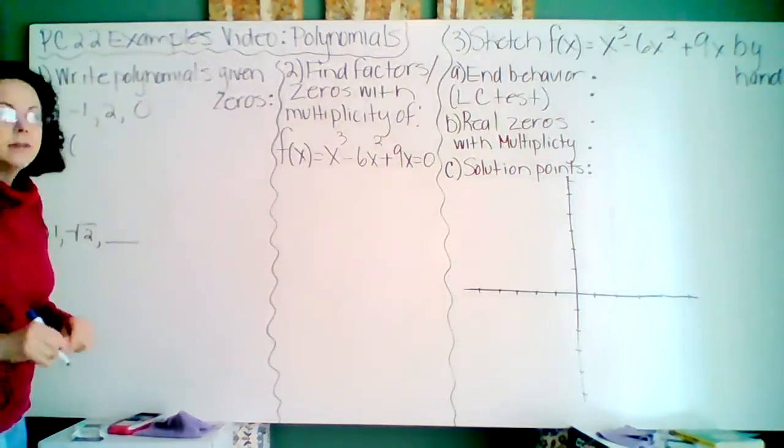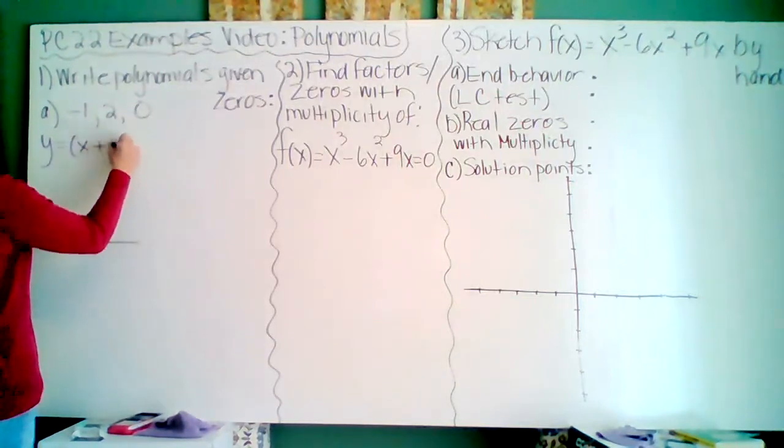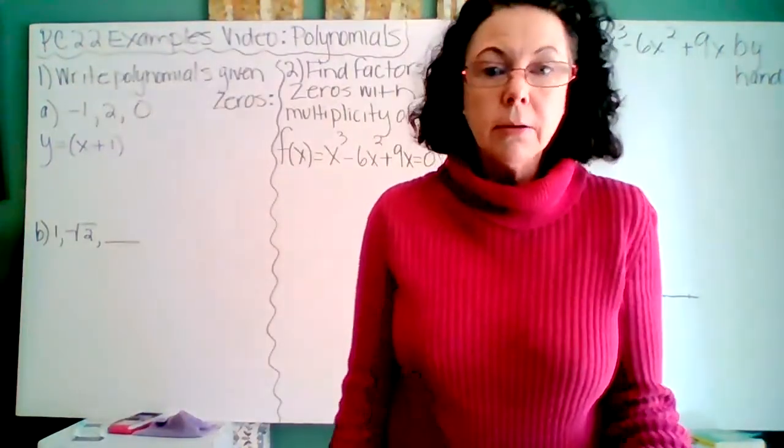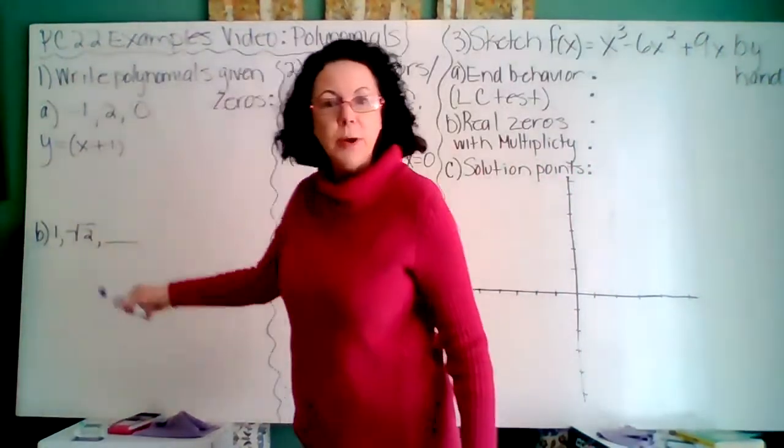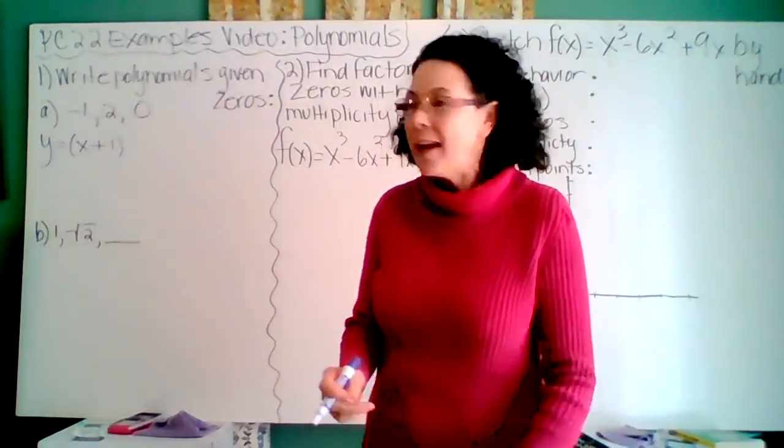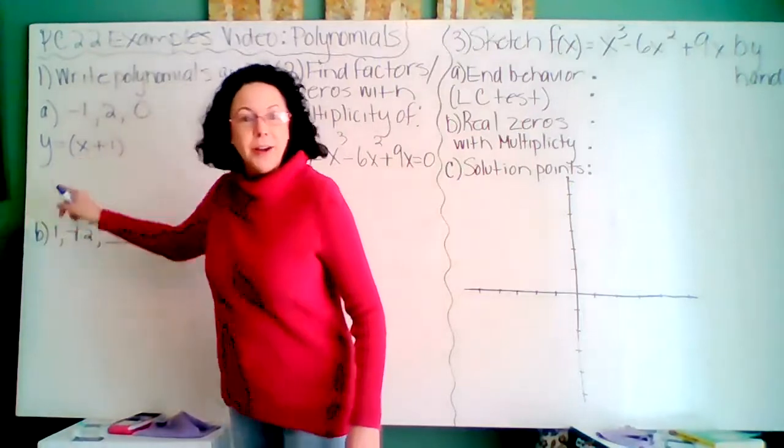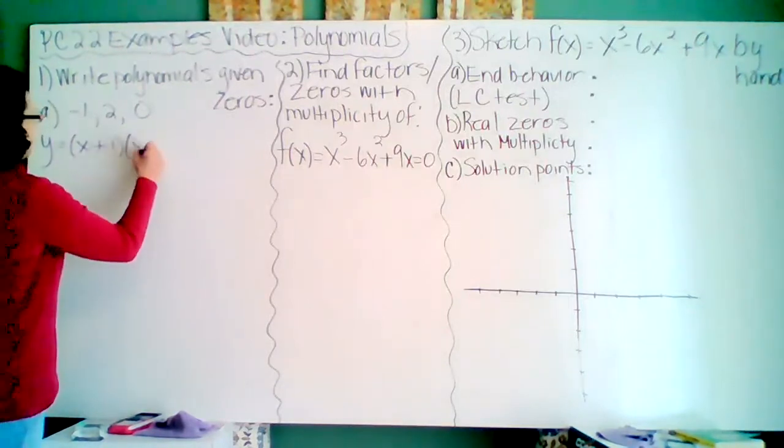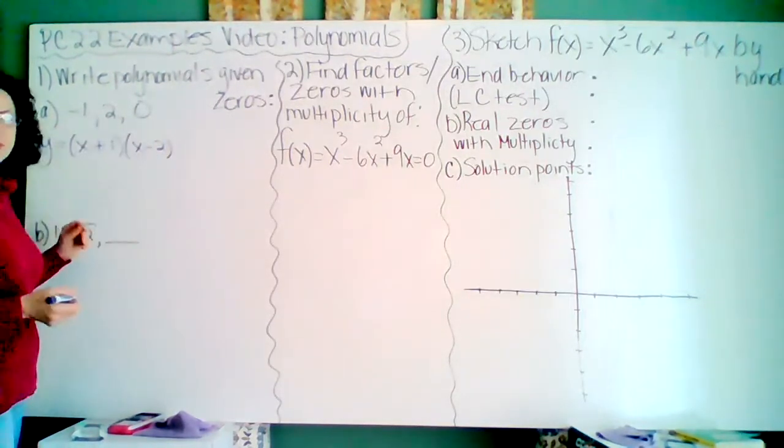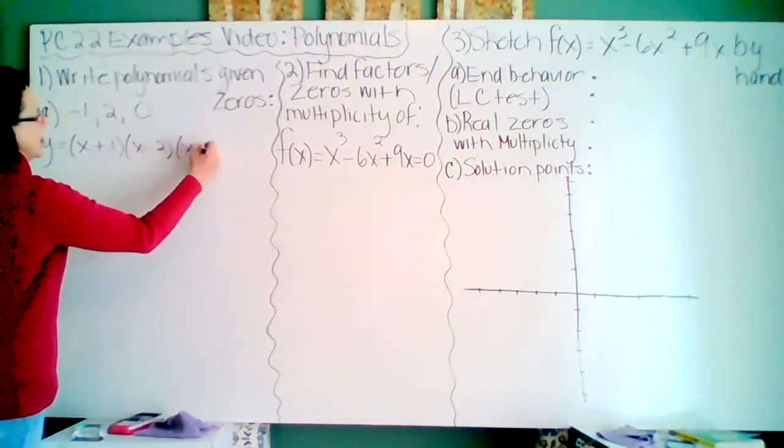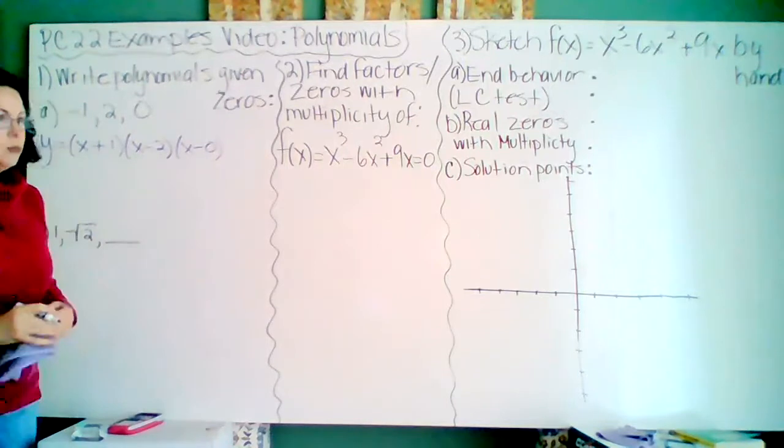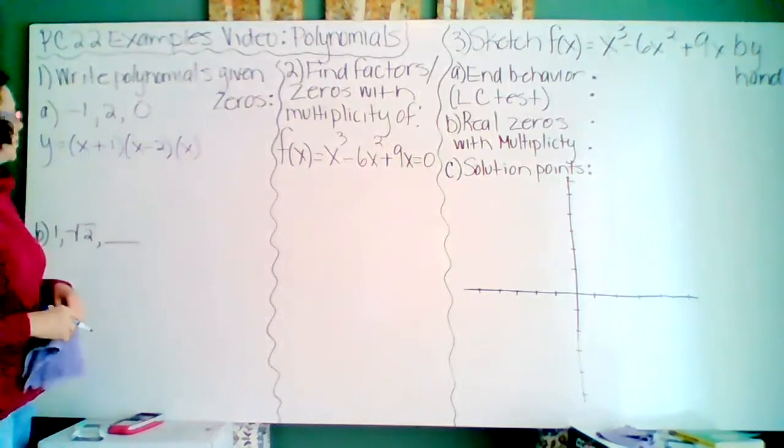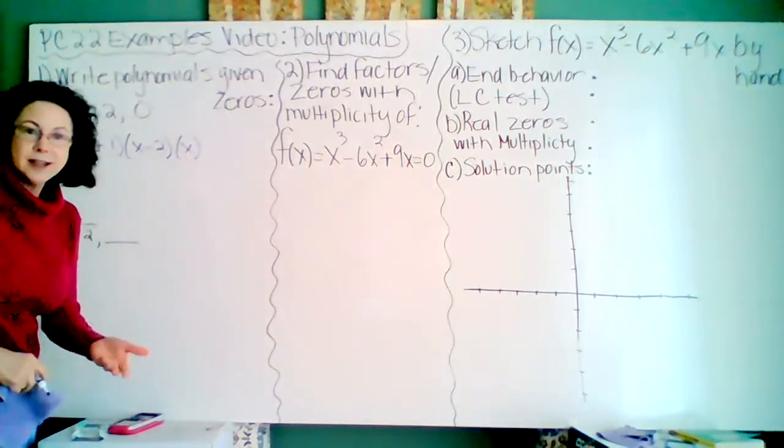So the opposite of negative 1 is plus 1. So the factor, a baby polynomial, x plus 1. Notice that its zero is negative 1. So the baby polynomial with a zero of 2 is x minus 2. And this will throw students when they have a zero, but really it's the same. It's x minus 0. Of course, we don't need minus 0. So when your root is a zero, you just have an x, because when you put a zero in, you get a zero.